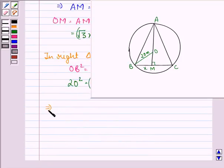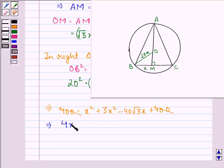This implies 400 is equal to x square plus 3x square minus 40 root 3x plus 400. Now, 400 gets cancelled from both the sides and we have 3x square plus x square is 4x square minus 40 root 3x is equal to 0.